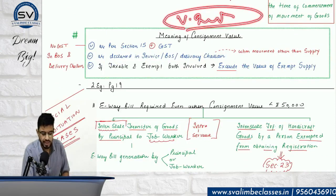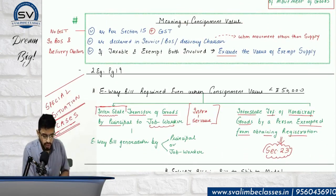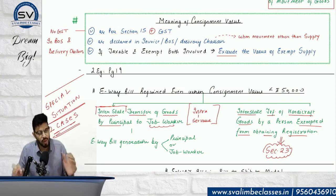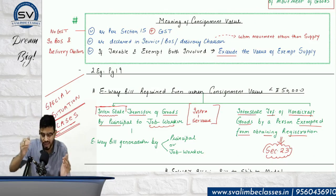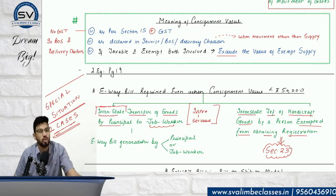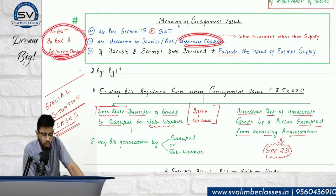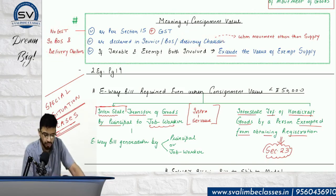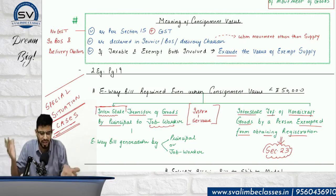Consignment value: if it exceeds ₹50,000, e-way bill is required. Consignment value means value of supply plus GST plus tax — total value including tax — as declared in the invoice, Bill of Supply, or delivery challan. Note that Bill of Supply and delivery challan will not have a GST portion. If both taxable and exempt goods are involved, focus only on taxable supply; exempt supply is excluded because no tax is involved there and government doesn't care about tax evasion on exempt goods.